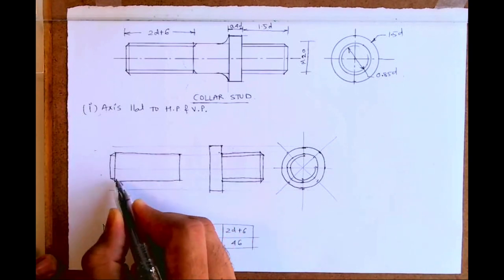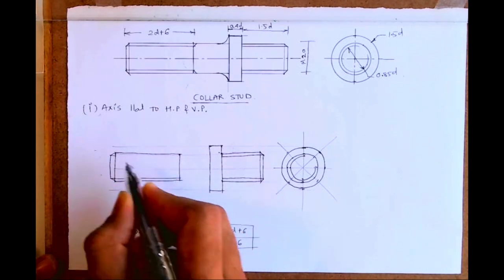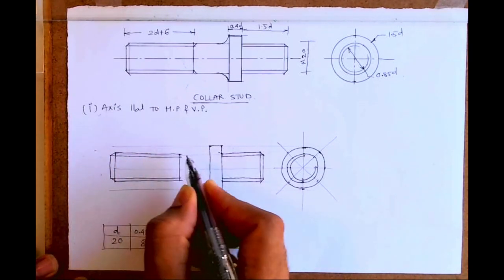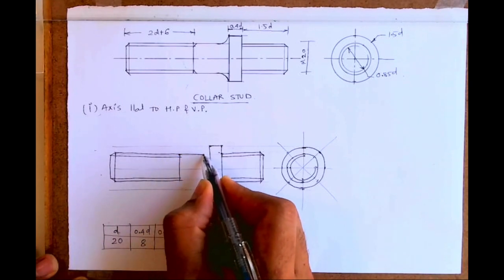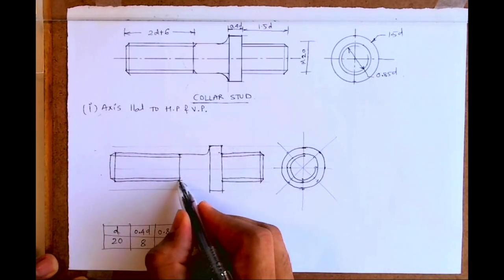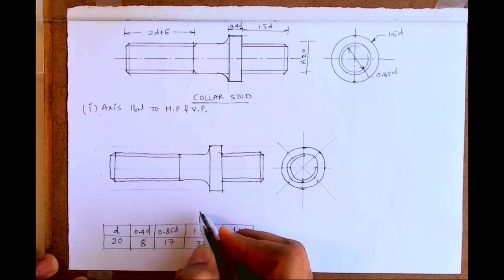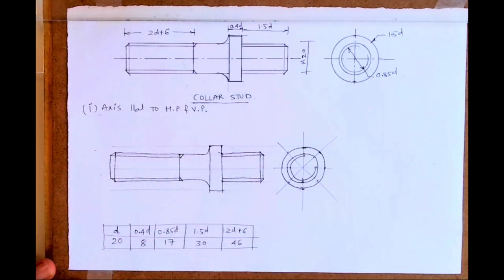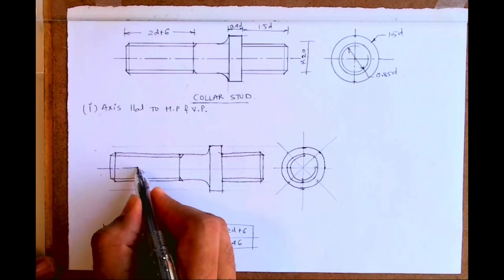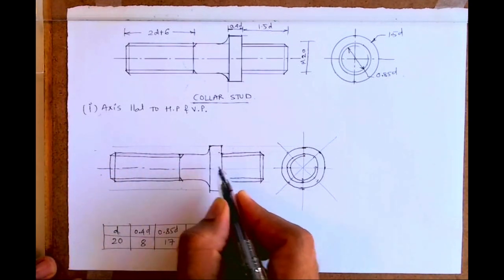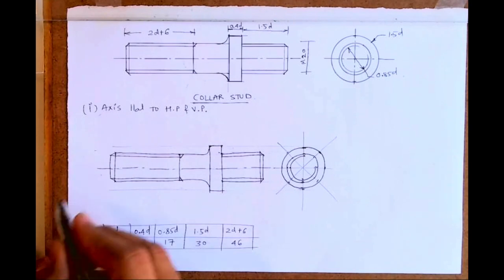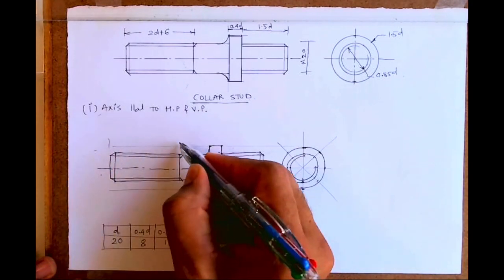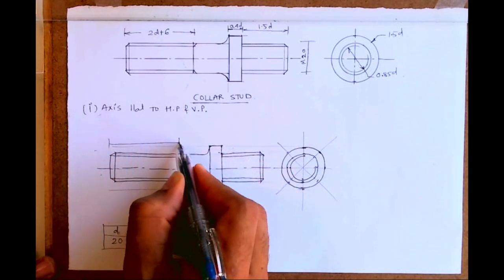Then you can show runoff angle. This will be done. This is curve, this is runoff angle. So we are done with this sum. Then we can do axis and dimensioning. So we are done with front view and side view of a collar stud.